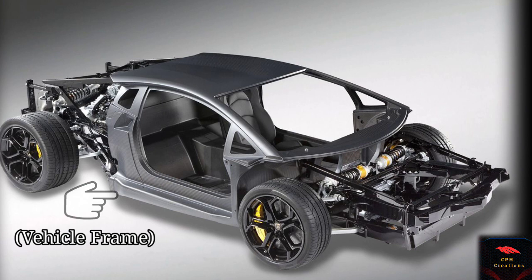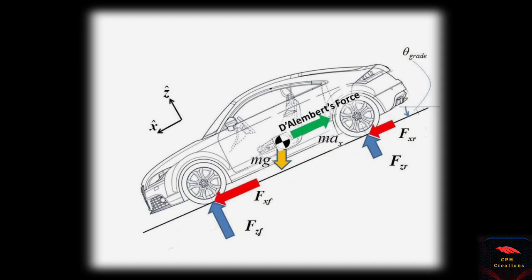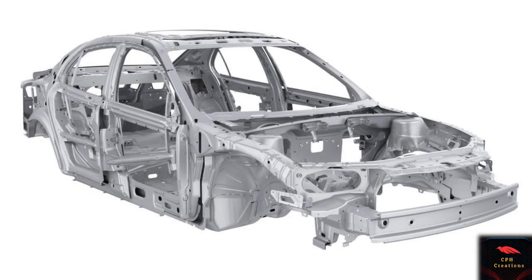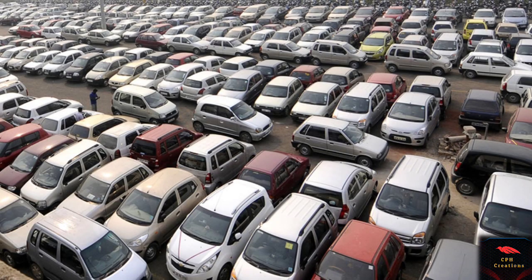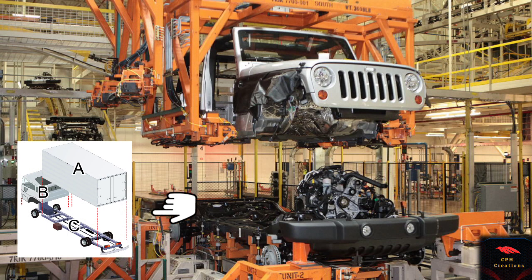A vehicle frame forms the basis of an automobile, known as the chassis. This frame supports the sub-assemblies and other components of the car. The chassis also provides stability to the car from the variety of forces and impacts that it has to sustain throughout its life. The construction of the frame is of a unibody type in the case of passenger cars, and most commercial vehicles such as trucks are produced with a body-on-frame construction.